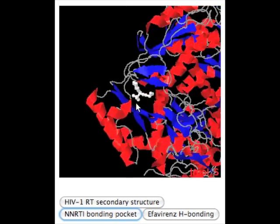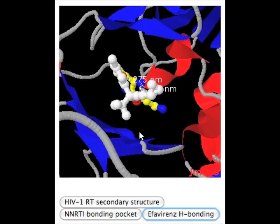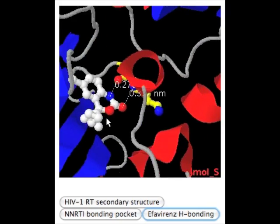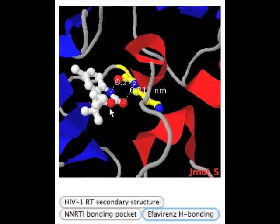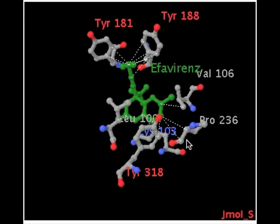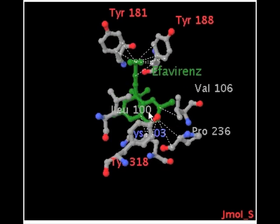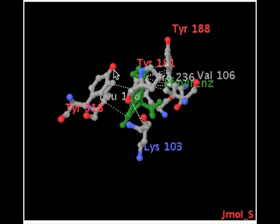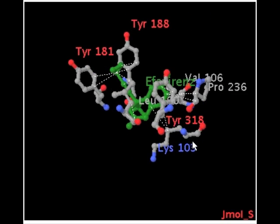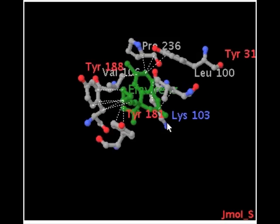The molecule of efavirenz, highlighted in white, is stabilized in the binding pocket by both H-bonding and hydrophobic interactions. The H-bonding interactions are between efavirenz and lysine-101 of the reverse transcriptase. Once incorporated into the NNRTI binding pocket, efavirenz interacts hydrophobically via tyrosine-181, tyrosine-188, valine-106, proline-236, lysine-103, leucine-100, and tyrosine-318. Many of these interactions are with the three-membered ring and aromatic ring of efavirenz.